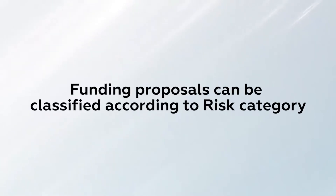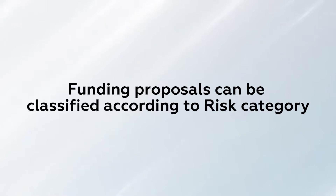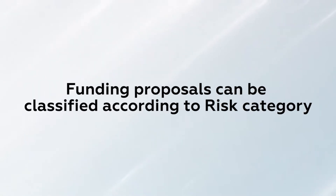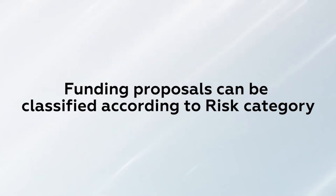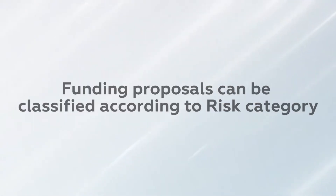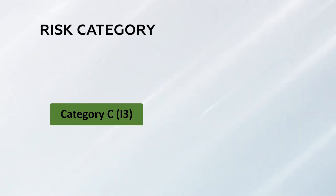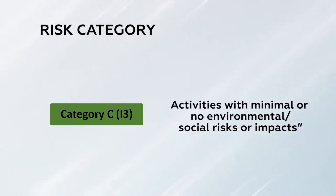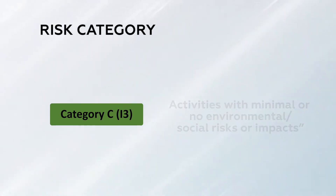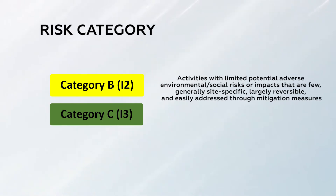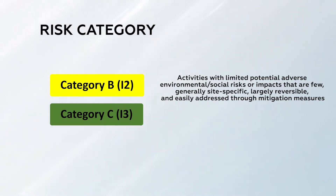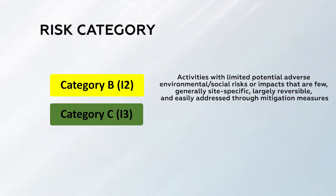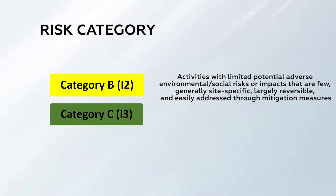Funding proposals can also be classified according to risk category. In the network of civil society organization observers, local communities, and indigenous peoples — the observers in the Green Climate Fund — we color-code all funding proposals according to their risks. Category C, the lowest risk, covers activities with minimal or no environmental and social risks or impacts; we call these green. Category B covers activities with limited potential adverse environmental and social risks or impacts that are individually or cumulatively few, generally site-specific, and largely reversible.